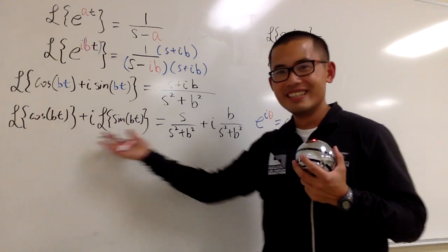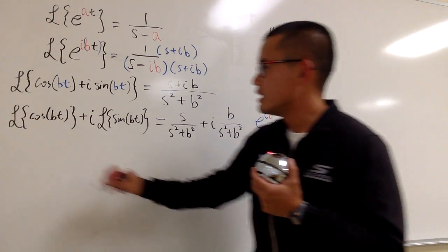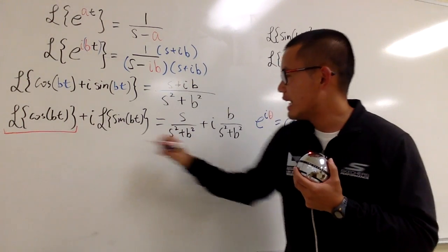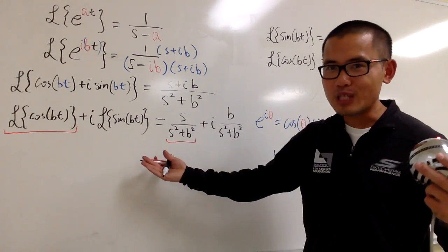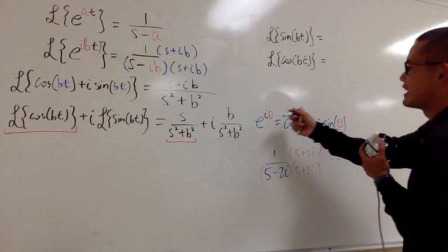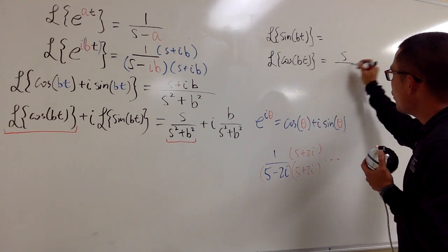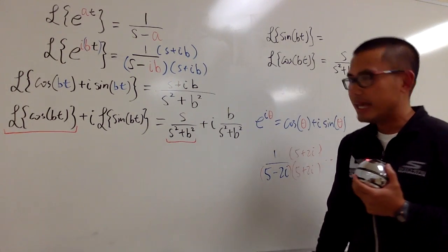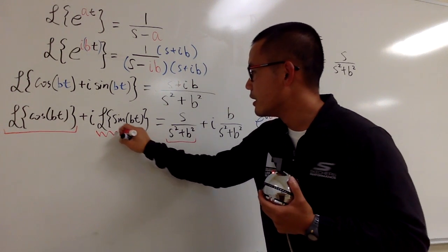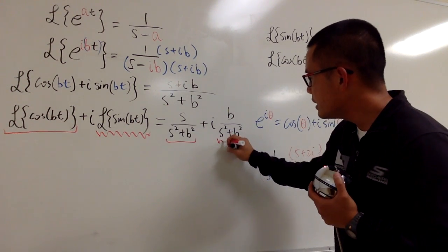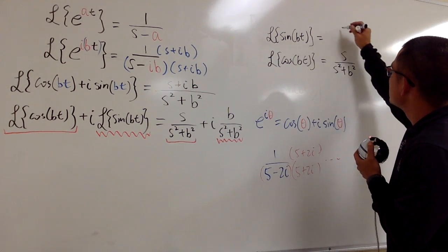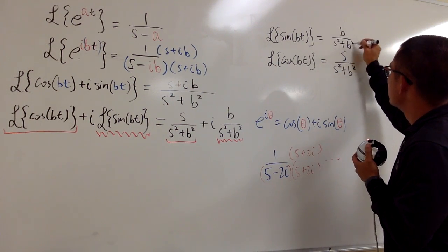Now, look at the left-hand side, and look at the right-hand side. This is technically the real part. It doesn't have any i. That means this has to match with that. Congratulations! We got our answer for the Laplace transform of cosine bt, which is that. This is s over s squared plus b squared. And then, this is i times this. Well, this is i times that. That means this Laplace transform of sine bt has to be this. For sine bt, we will have b over s squared plus b squared.